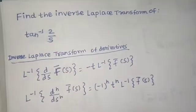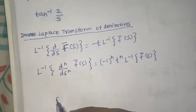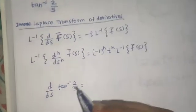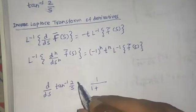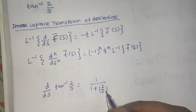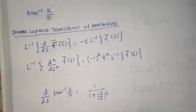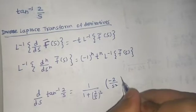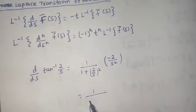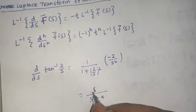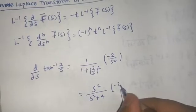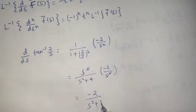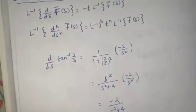First of all, let's find the first derivative. The derivative of tan inverse 2 by s — d by ds of tan inverse 2 by s — equals 1 upon 1 plus this square, and then the derivative of 2 by s. The derivative of 1 upon x is minus 1 by x square, so we get minus 2 by s square. Simplifying: 1 upon s square plus 4, and s square cancels, giving us minus 2 by s square plus 4.